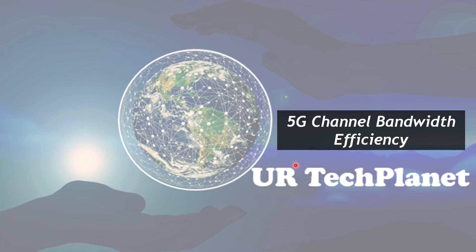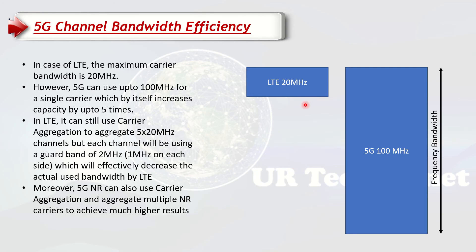The next topic is 5G channel bandwidth and its efficiency — how a 5G channel bandwidth is more efficient compared to legacy LTE. In LTE, we usually have a maximum channel bandwidth of 20 megahertz, but in 5G we can go up to 100 megahertz.